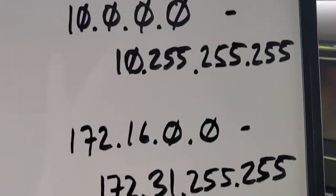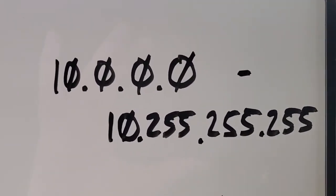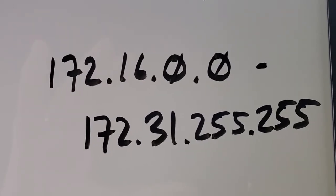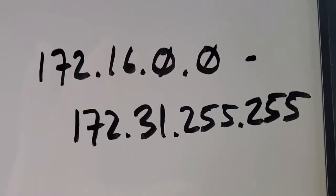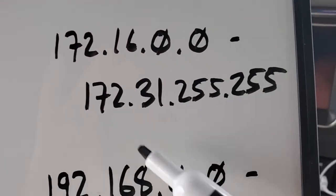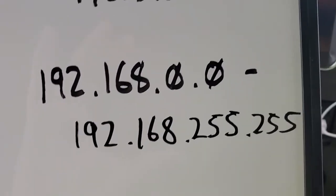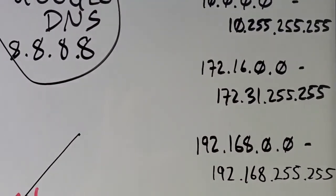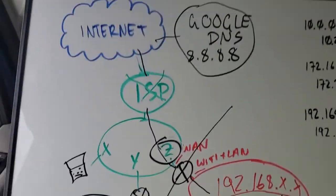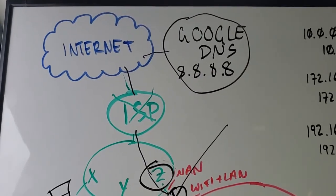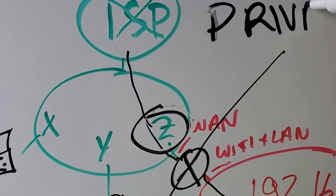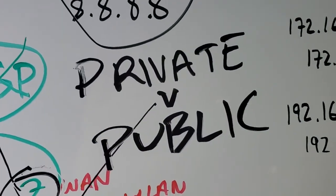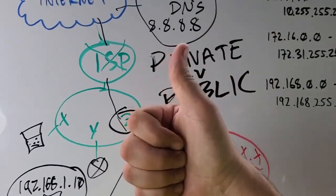I just want to show you again — these are the private address ranges. Anything in these ranges: some routers use the range starting with 10, and there's the 172 range. I'm pretty sure Windows uses this range if it can't find a DHCP server — it'll assign itself one of those addresses. And most routers I've seen will give you 192.168.whatever.whatever. So anything in those ranges is private. I hope that helped out and didn't make it more confusing. That is private versus public IP addresses. If that helped you out and you learned something, please give me a thumbs up. Thank you so much for watching.